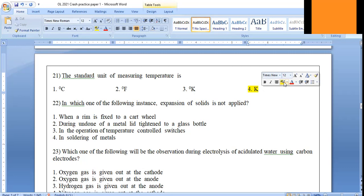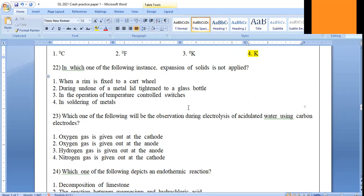When you take the third answer, in the operation of temperature control switches, we are using bimetallic strips. When you heat bimetallic strips, they are bending due to expansion. So 22nd answer is the fourth one, because metals are melting during soldering - it's a kind of welding.